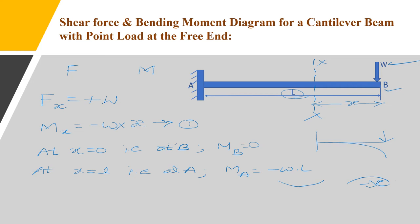The bending moment value is -WL. Now we know the shear force value is +W, constant from B to A since there is no load between them. The bending moment is -WX; substituting X = 0 gives MB = 0, and substituting X = L gives MA = -WL. With these values we can now draw the shear force diagram and bending moment diagram.